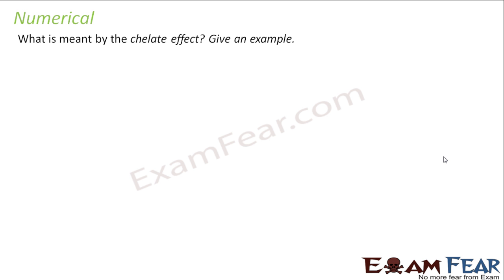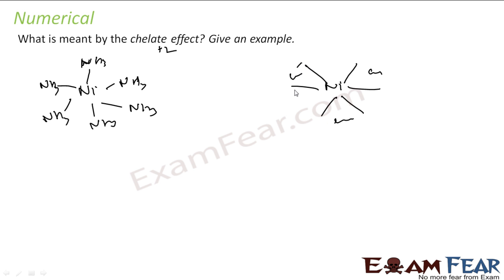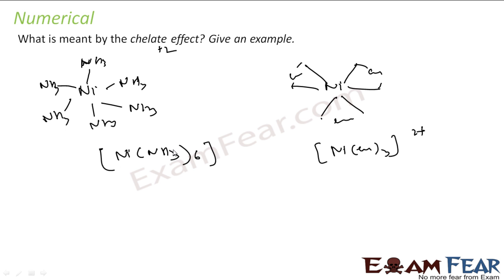What is the chelate effect? When ligands are attached to the metal ion and form a ring, they give a more stable coordination compound. These complexes have chelate rings and are more stable — this is called the chelate effect. For example, comparing two Ni complexes: one with a chelating ligand forming a ring (more stable) versus one with separate monodentate ligands (no ring, less stable). The chelating complex is more stable.